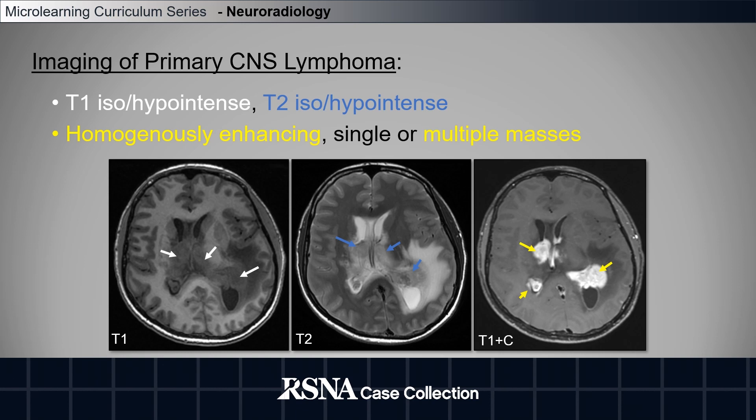Typically, these tumors will be T1 iso to hypointense, T2 iso to hypointense, will homogeneously enhance, and can present as single or more commonly as multiple masses.